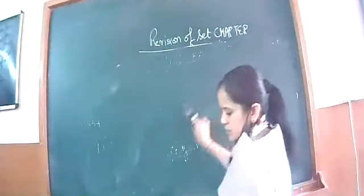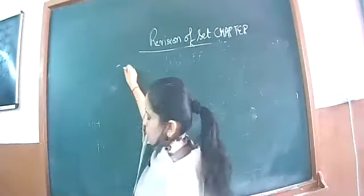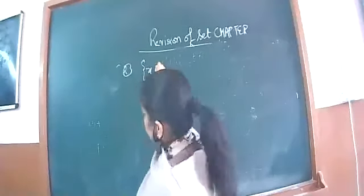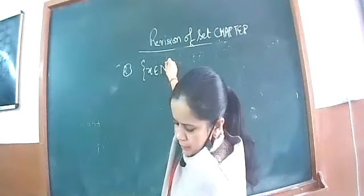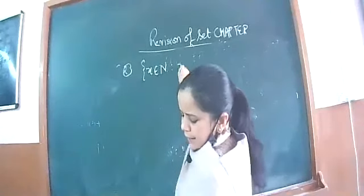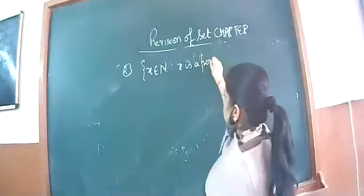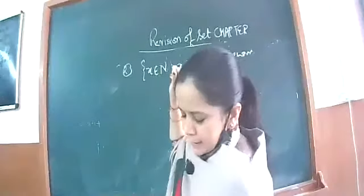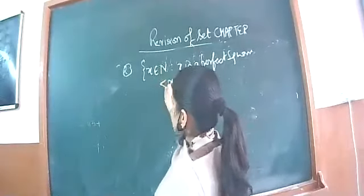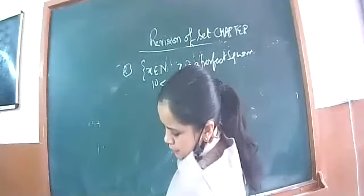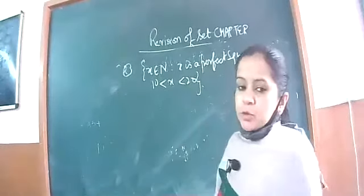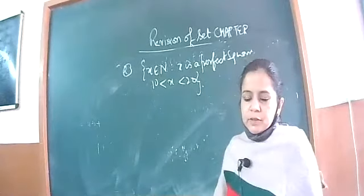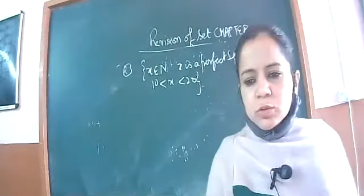Very good. Next question: describe the set that is written as x such that x belongs to natural numbers, x is a perfect square, x is greater than 10 and less than 20. We have to describe this set in roster form. Who is able to answer this question?